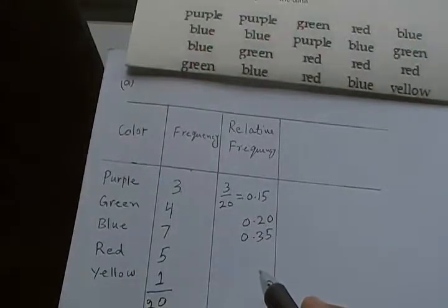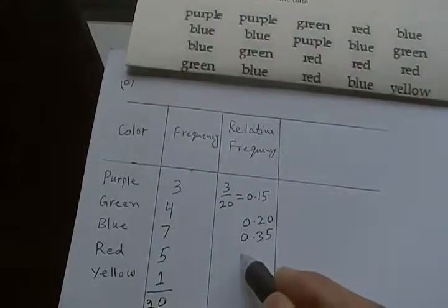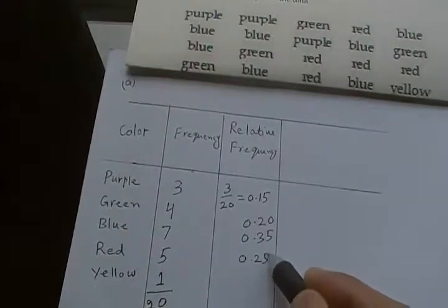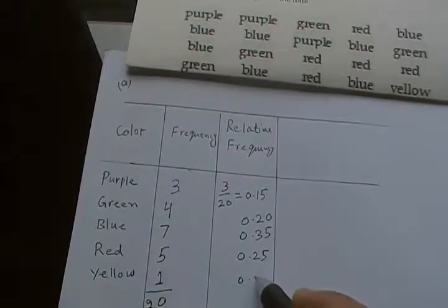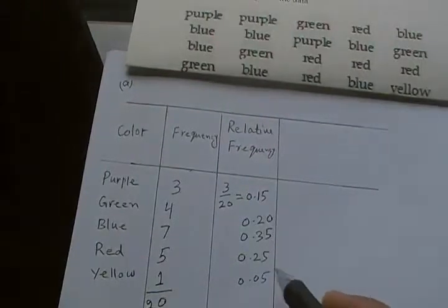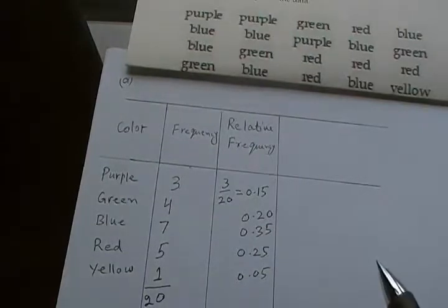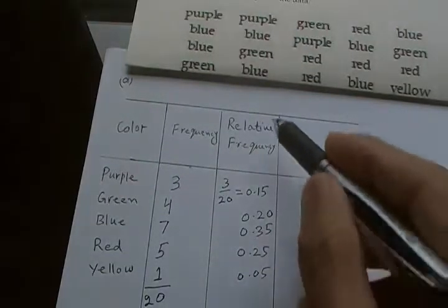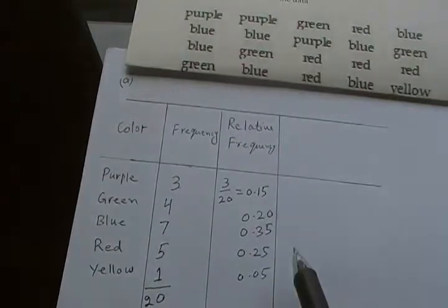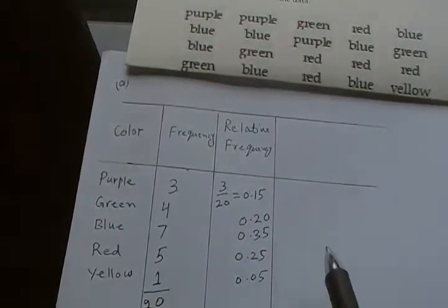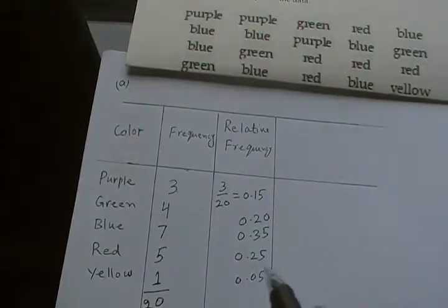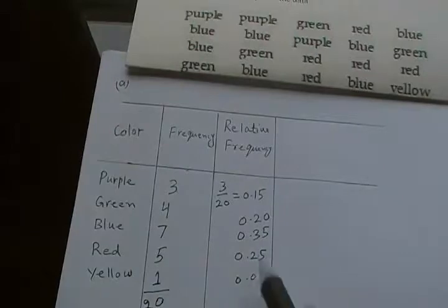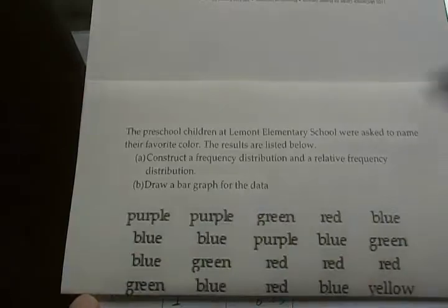Then we have red, that's 5 out of 20 which is 0.25, and then yellow 1 out of 20 which is 0.05. That's your relative frequency distribution table - this column together with these colors. To make sure you have not made any mistakes, you add these relative frequency distribution columns and this must be equal to 1.